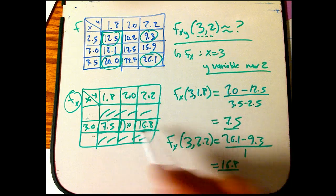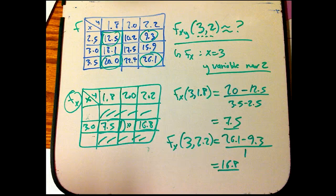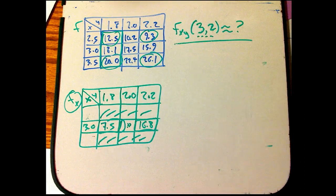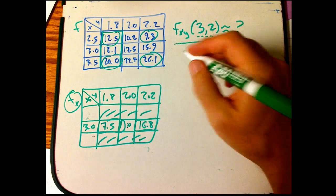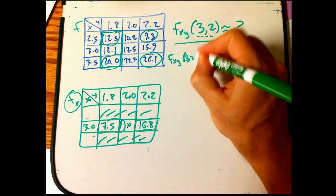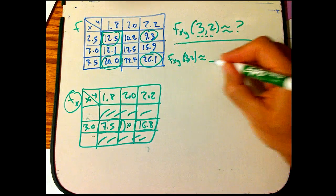And to do that, I'm going to bracket with these values. Let's get the eraser here. And I'm going to have fxy of (3,2) approximately equals...